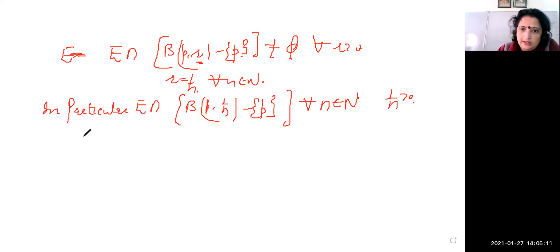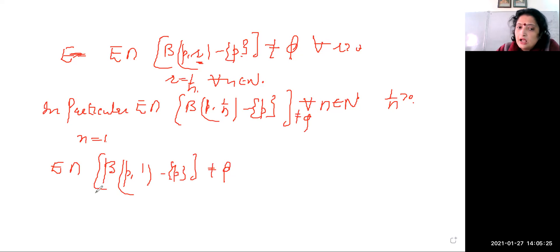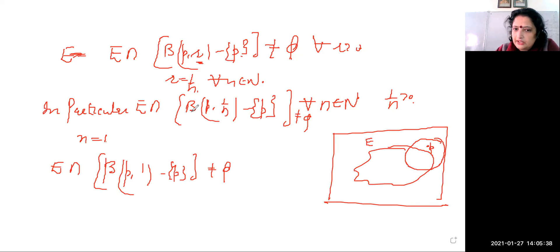Now put n equal to 1: E intersection with B(p, 1) minus the singleton set {p} is not equal to phi. If it is not equal to phi, look at the figure. This is our set E, here is the point p, and here is the ball with radius 1 centered at p.